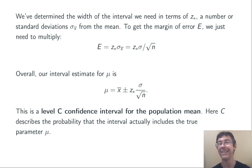We call this a level C confidence interval for the population mean, where C is describing the probability that the interval actually includes the true parameter mu. In other words, we expect this confidence interval to be correct C percent of the time, roughly speaking.